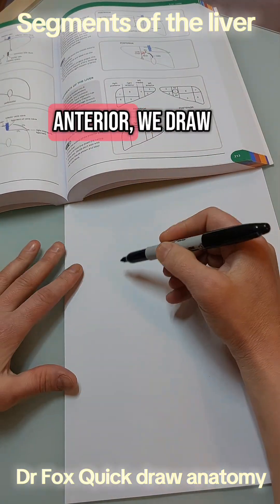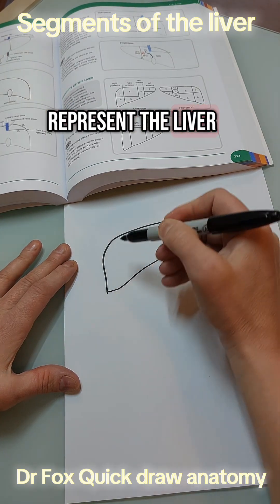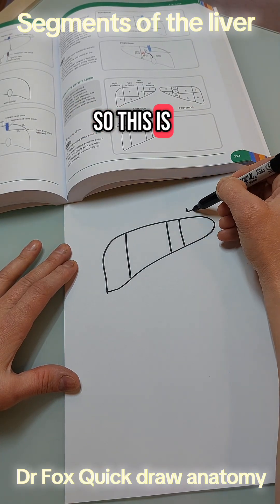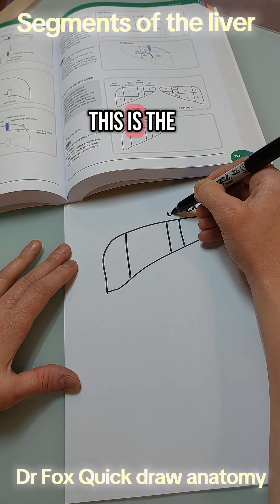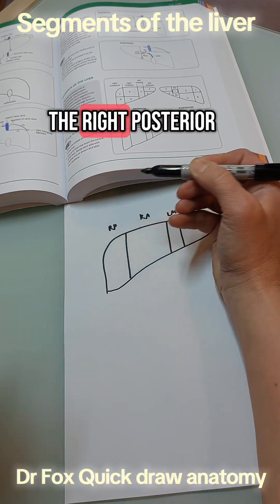So for the anterior we draw a triangle to represent the liver and then we split it into four sections. So this is the left anterior, this is the left medial, this is the right anterior and this is the right posterior.